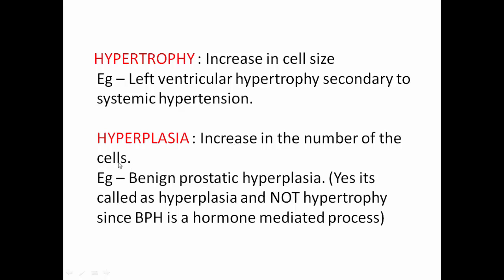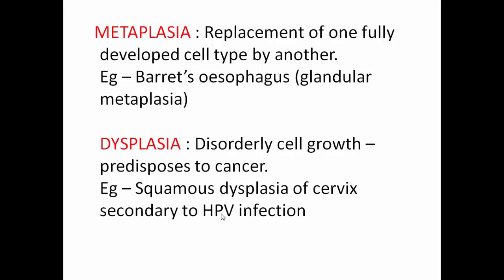Hyperplasia is an increase in the number of cells, not their size. A common example of mixed hypertrophy and hyperplasia is endometrial growth during the menstrual cycle. A specific example of hyperplasia is BPH — benign prostatic hyperplasia. Remember, it is hyperplasia and not hypertrophy; if any book writes it as hypertrophy, that is incorrect. BPH is a hormone-mediated process and does not lead to any increased risk of carcinoma of the prostate.